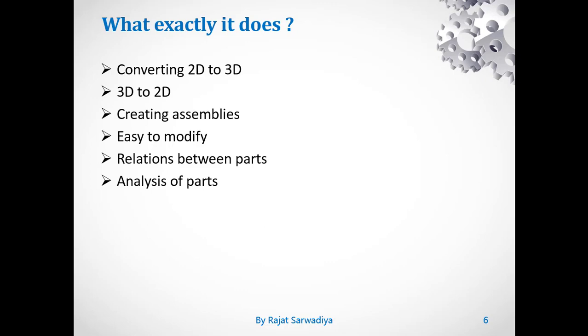But in the CAD tools, yes, we can assemble it and check whether there are clashes or not. If there are clashes, then initially only we will be able to modify those dimensions. And we can resolve those clashes and then we can send the parts for manufacturing, so that there will not be any kind of problem after manufacturing during the assembly.